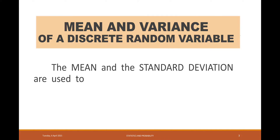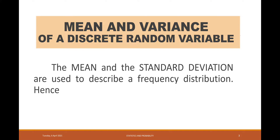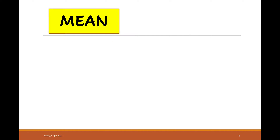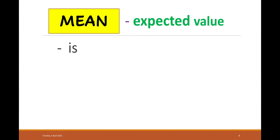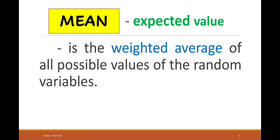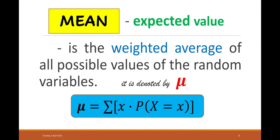The mean and the standard deviation are used to describe a frequency distribution, and hence they can also be used to describe a probability distribution. Mean is defined as the expected value — it is the weighted average of all possible values of the random variables. This is denoted by the symbol mu, and the formula for finding the mean is the summation of the product of x and the probability of x.